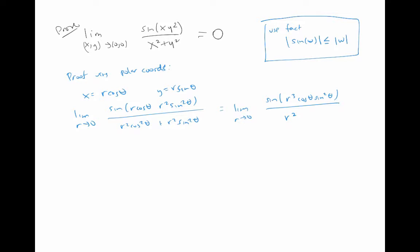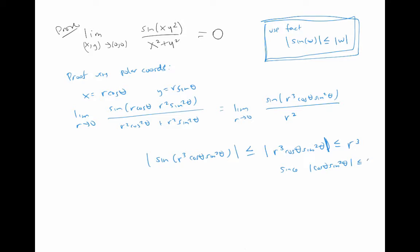Now I want to use the fact that the absolute value of sine of w is always less than or equal to the absolute value of w. So we know the absolute value of sine of r³ cosθ sin²θ is less than or equal to the absolute value of r³ cosθ sin²θ, which is less than or equal to r cubed, since the absolute value of cosθ sin²θ is always less than one.